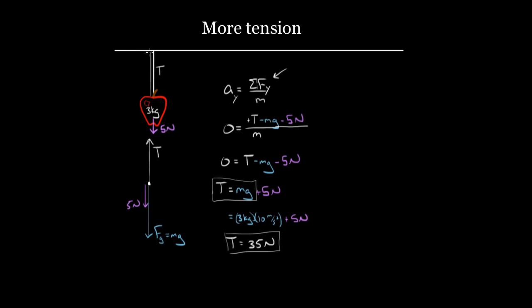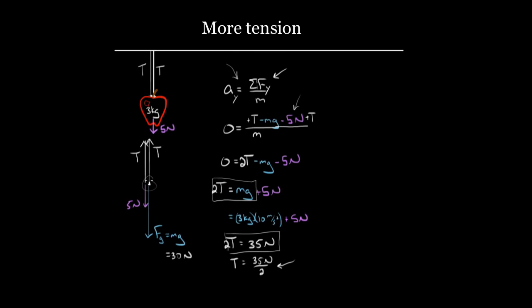Also, if there was another rope pulling up at the same spot, now I'd have two tensions pulling up. I'd add another T — T plus T is just 2T. To solve for T, I'd divide 35 Newtons by two. The total downward force is 35 Newtons and the total upward force has to match. If the strings are attached at the same point, they each bear half the weight, so each tension is 35 over two Newtons.